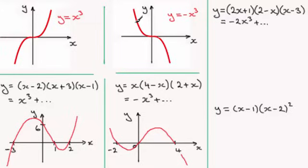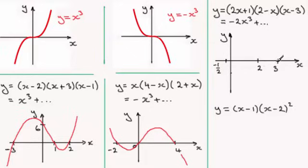Where does it cross the x-axis? Each factor equals 0: when 2x plus 1 equals 0, x equals minus a half; when 2 minus x equals 0, x equals 2; when x minus 3 equals 0, x equals 3. So it crosses at minus a half, 2, and 3 on the x-axis. For the y-intercept (x equals 0), we get 1 times 2 times minus 3, which is minus 6. So mark minus 6 on the y-axis.